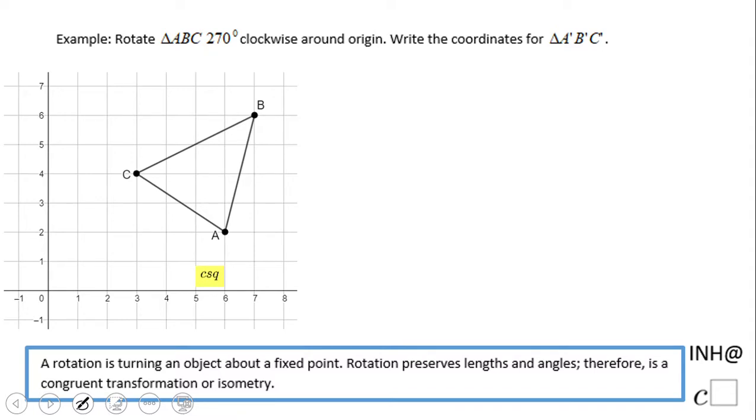Welcome to C squared. We're going to look at a problem like rotating 270 degrees clockwise around the origin of this triangle. We're going to need a little bit of graph paper.